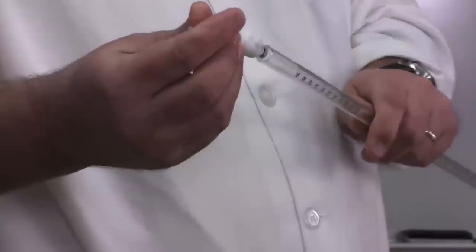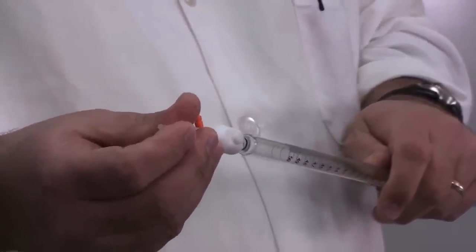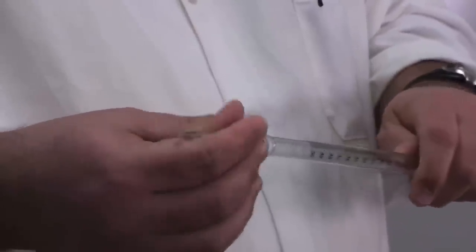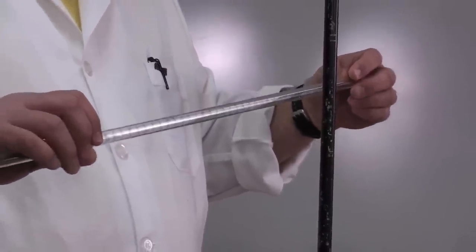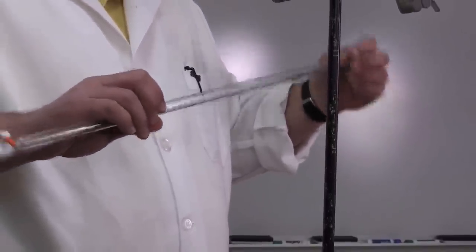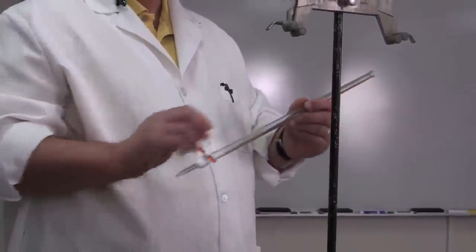These burettes have interchangeable parts. Sometimes those parts come loose—if they come loose during your experiment, that's a mess. So make sure everything is on tight, make sure the stopcock is closed. Then we're going to put a little permanganate solution in the burette just to rinse it out, get any dust out, then we'll empty it and fill it up.